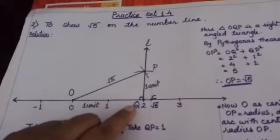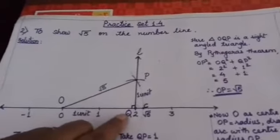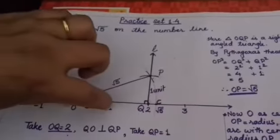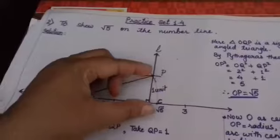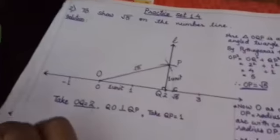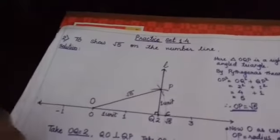What we have to do from point Q: we have to take 1 unit distance as we have taken from 0 to 1. Same 1 unit distance you will take from this point 2 and draw one perpendicular line from that arc.